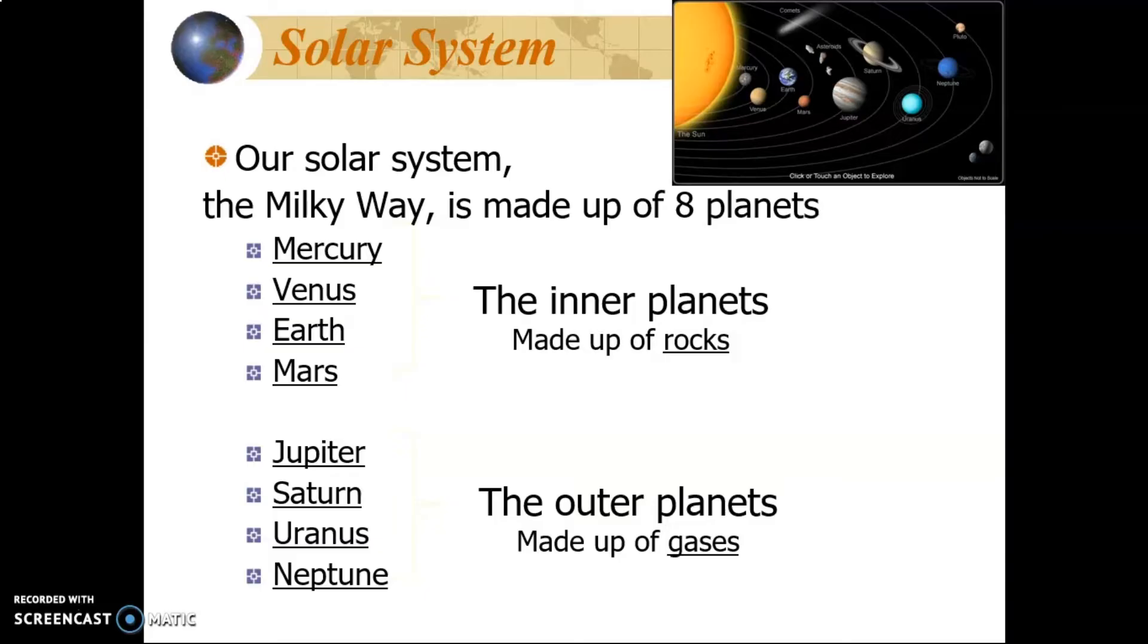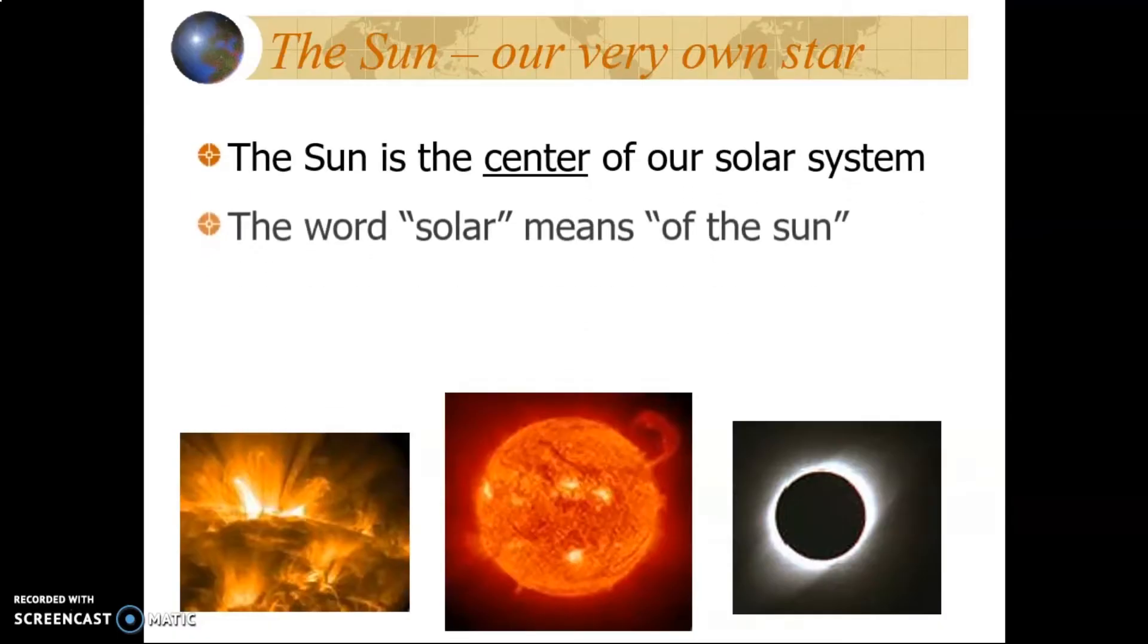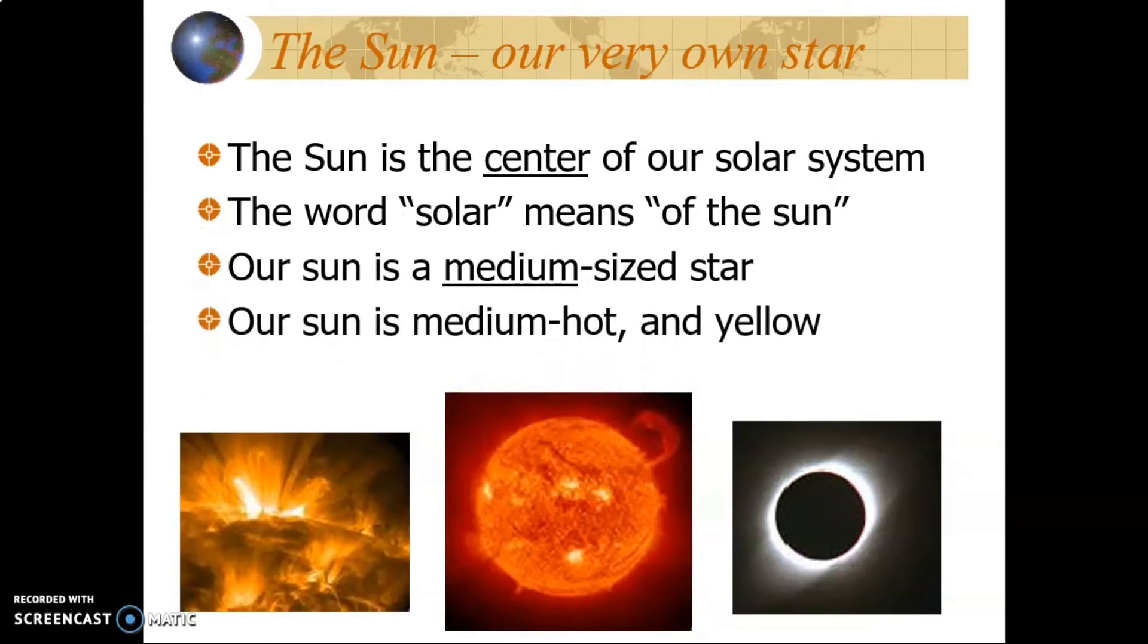Jupiter, Saturn, Uranus, and Neptune are the outer planets and are made up mostly of gases. The Sun is the center of our solar system, and its mass makes up most of the mass of our whole solar system. The word solar means of the Sun, which comes from the root word Sol, or Sun.